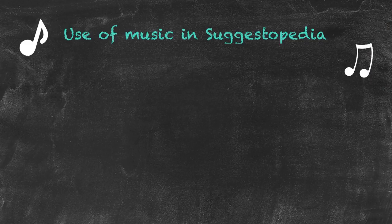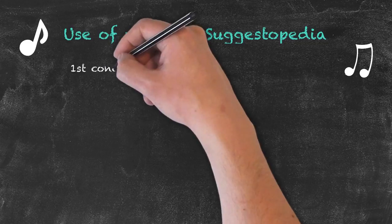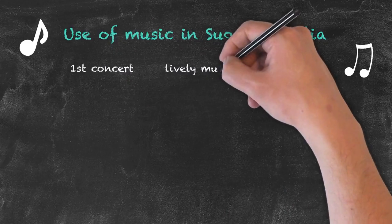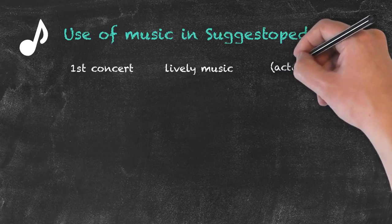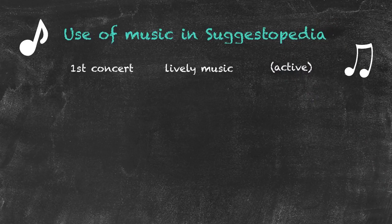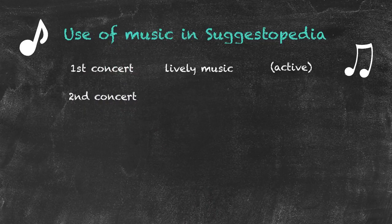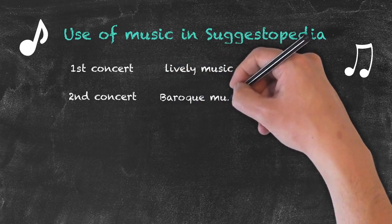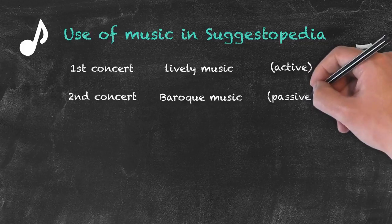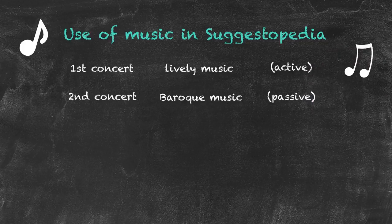In the first section, which is sometimes called the first concert, we use lively music. This is known as the active part of the lesson — the lively music starts to get our brainwaves moving and puts us into a receptive mood. Then in the second concert, the teacher introduces the target language, usually in the form of dictation. Whilst that's taking place, we use Baroque music, which puts us into a passive state and allows us to become like a sponge, absorbing the information.